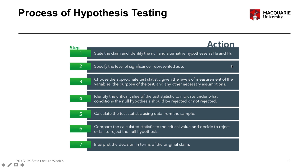We then want to identify the appropriate test statistic given the particular research question, the design of the experiment, and the measurement level of our variables. We then go through the actual process of doing a statistical test. The remaining steps involve null hypothesis significance testing, which is a specific process, but the overall process shown on the slide is the same regardless of which test we're doing.